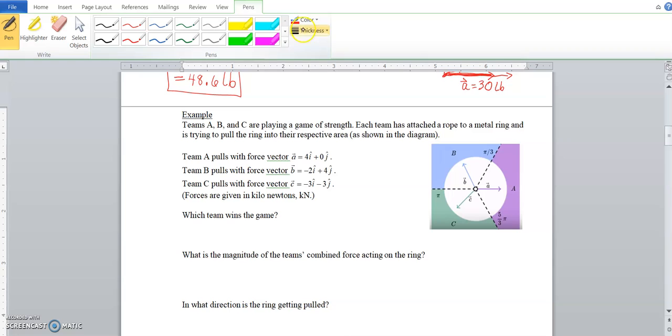It's a little bit different with three teams, but the basic principle is the same. So the first thing I'm going to do is take and rewrite these as vectors in component form. There's your component form. Which team wins the game? The team with the largest magnitude.